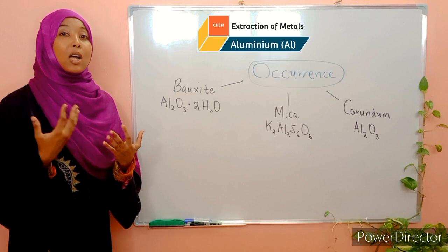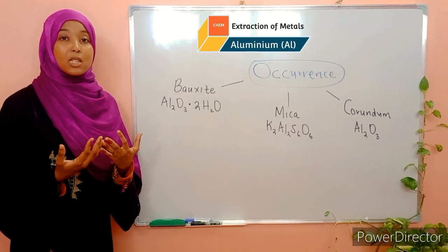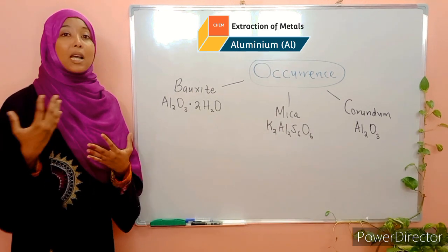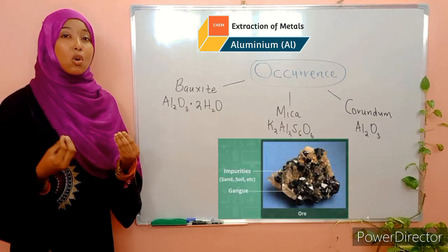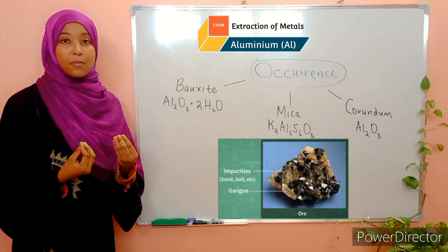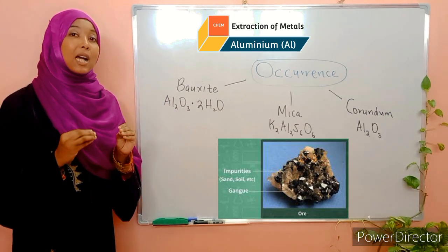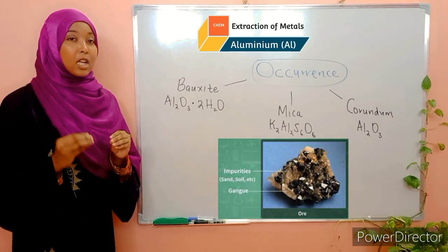Ores tend to have a lot of impurities. These can be other minerals, sand, soil, etc. Collectively, they are known as gangue. So these impurities need to be removed.